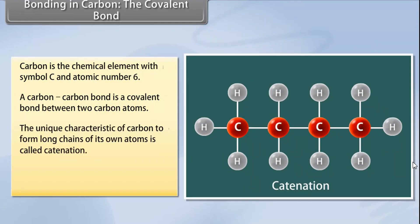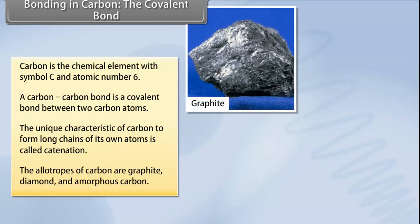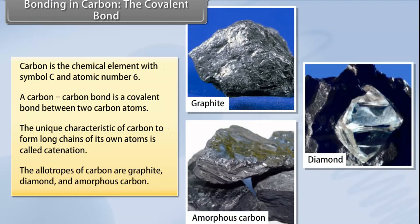Carbon also has the unique characteristic to form long chains of its own atoms. This property is called catenation. The allotropes of carbon are graphite, diamond, and amorphous carbon.